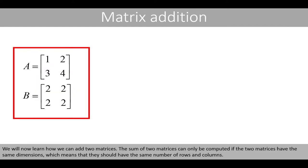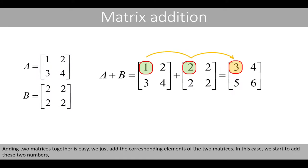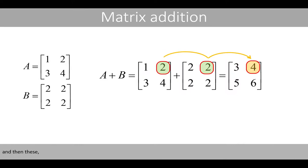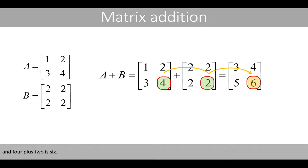We will now learn how we can add two matrices. The sum of two matrices can only be computed if the two matrices have the same dimensions, meaning they should have the same number of rows and columns. In this case, matrix A and B have the same dimensions, which means they can be added. Adding two matrices is easy — we just add the corresponding elements. For example, 3 plus 2 is 5, and 4 plus 2 is 6.